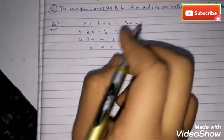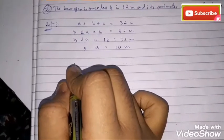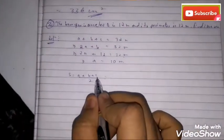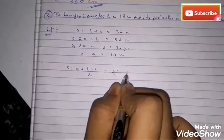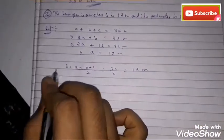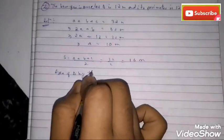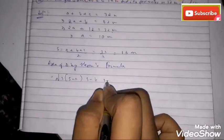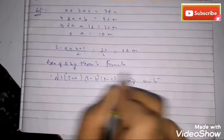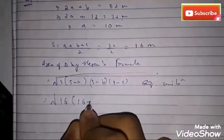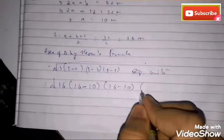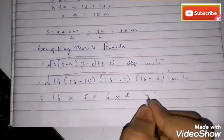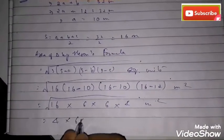Now we find s. Instead of adding a + b + c directly, we can use the perimeter: s = perimeter / 2 = 32 / 2 = 16 meters. Area of triangle by Heron's formula = √(16 × (16−10) × (16−10) × (16−12)) = √(16 × 6 × 6 × 4) = 4 × 6 × 2 = 48 square meters.